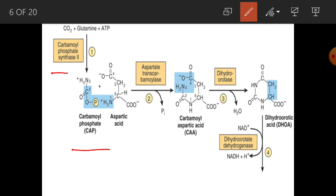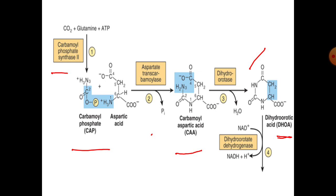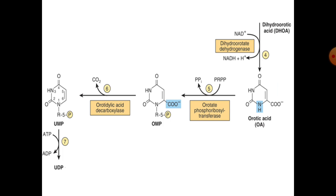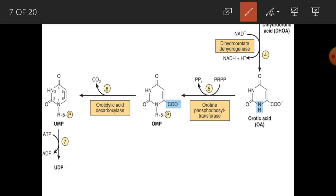Aspartic acid is then attached to carbamoyl phosphate. In the presence of aspartate transcarbamoylase, we get carbamoyl aspartic acid. Then in the presence of dihydroorotase, we get dihydroorotic acid. In the presence of dihydroorotate dehydrogenase, we then obtain orotic acid — a key junction product from which different pyrimidine nucleotides will be synthesized.